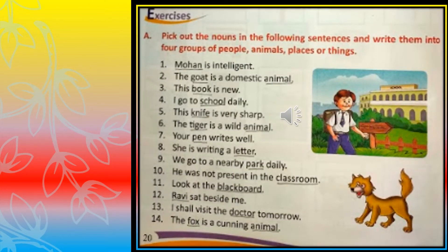Here are some exercises from your English grammar book. The first exercise is: pick out the Nouns in the following sentences and write them into four groups — people, animals, places or things. We will pick out the Nouns first, and then a list is given in your book where we will select the words and fill them in.